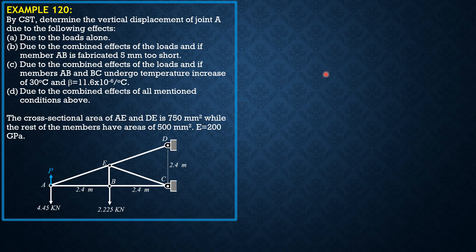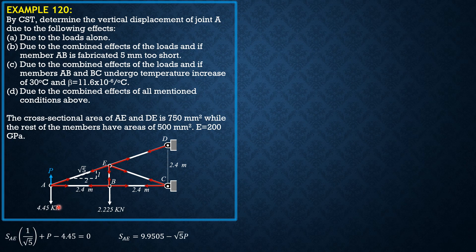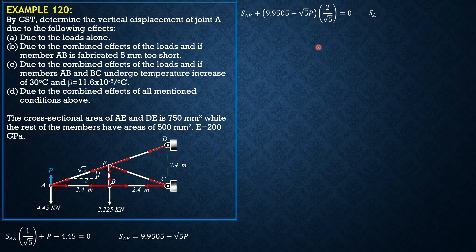First we consider joint A. The slope of members AE, VE, and CE is 1:2:√5, since the length of VE is 1.2 (half of 2.4). Forces are assumed in tension. Summation of forces in Y at A: SAE × (1/√5) + P − 4.45 = 0, so SAE = 9.9505 − √5·P. Then summation of forces in X at A: SAB + (9.9505 − √5·P) × (2/√5) = 0, giving SAB = −8.9 + 2P.